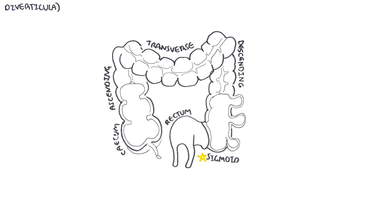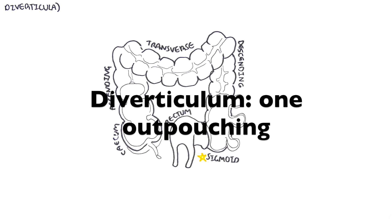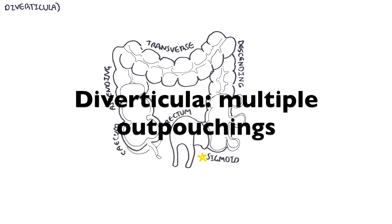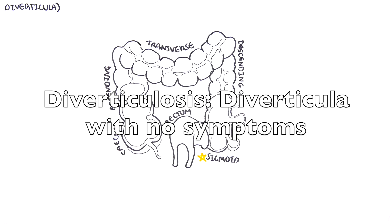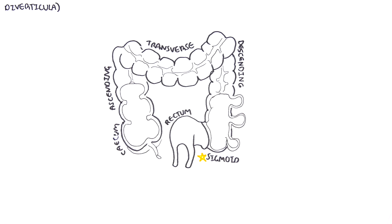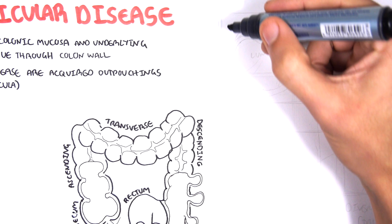Before continuing, it is important to know the terminology. A diverticulum is one outpouching. Diverticula is the plural — multiple outpouchings. Diverticulosis is the presence of diverticula, which is usually asymptomatic with no symptoms. Diverticular disease is an umbrella term which can present as either symptomatic or asymptomatic, covering a variety of conditions involving the diverticula.